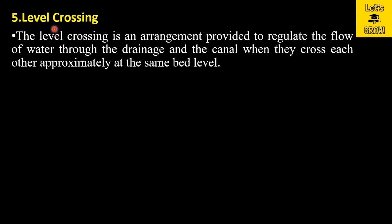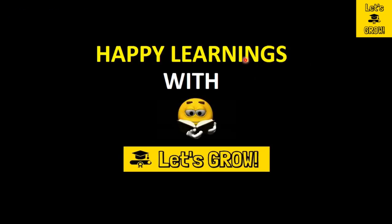The last structure is the level crossing. A level crossing is an arrangement provided to regulate the flow of water through the drainage and the canal when they cross each other at approximately the same bed level. When two water-conveying media — one drainage and one canal — meet at the same level, the structure provided is known as the level crossing.